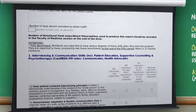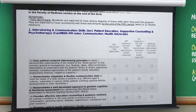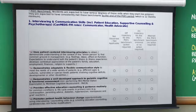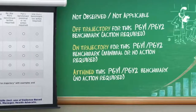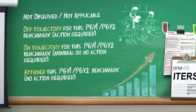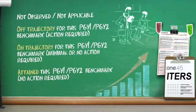The new forms have three changes from our previous form. The first change is the scale for rating resident performance. Unlike the traditional scale regarding the degree of achievement of expectations, we're going to use an action-oriented scale — what does the preceptor recommend is to be done about the resident's performance?